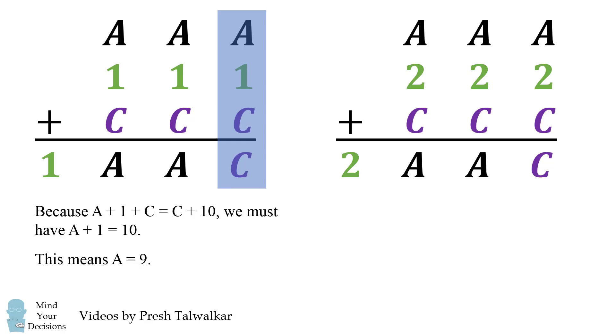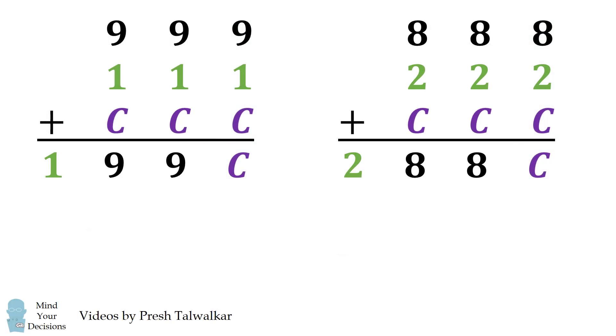Similarly, in our other case, we must have A plus 2 plus C is equal to C, which means A plus 2 is equal to 10 and therefore A is equal to 8 in this case. So we either have 999 plus 111 or 888 plus 222.